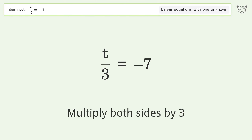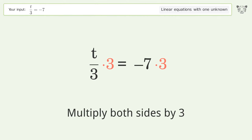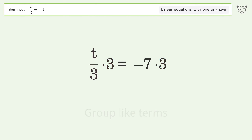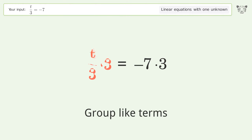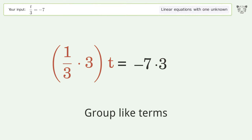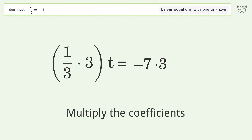Multiply both sides by three. Group like terms. Multiply the coefficients.